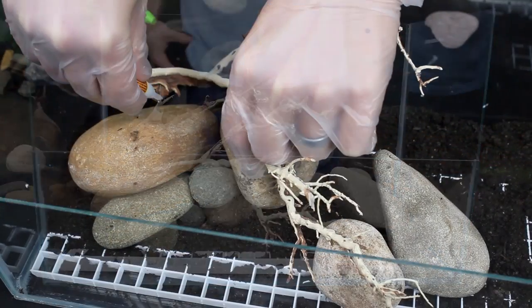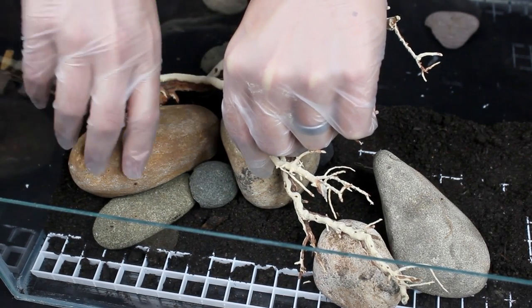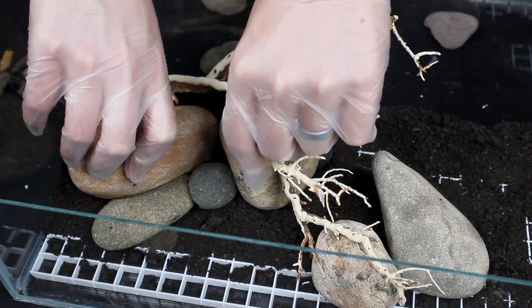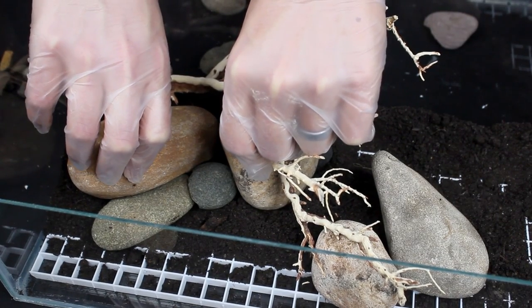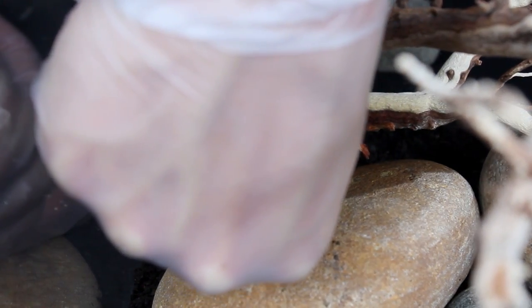To make sure I could retain this look I super glued the manzanita wood onto the stones. It doesn't take much. Just find a few spots where the wood touches a stone and add a small drop of glue. It should only take about five minutes for everything to set up but if you use water as a catalyst it can speed up the process.